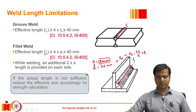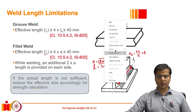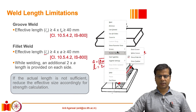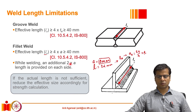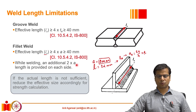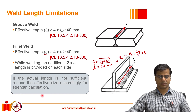One must also notice that whatever weld is provided as per the design and drawings, the welder at the site will add some additional length — at least two times the size of the weld is usually added to the fillet weld on each side.